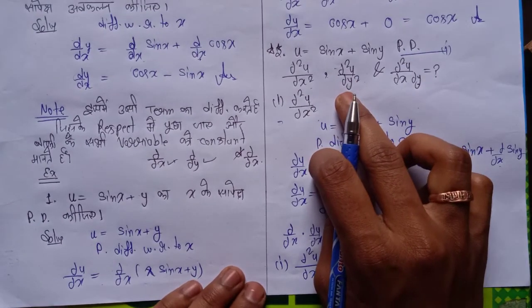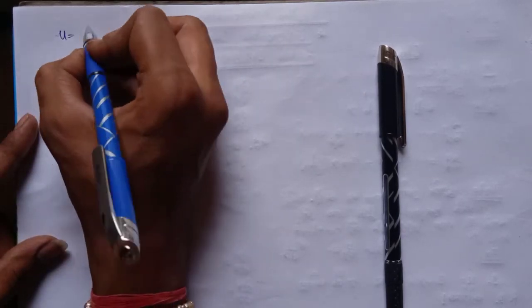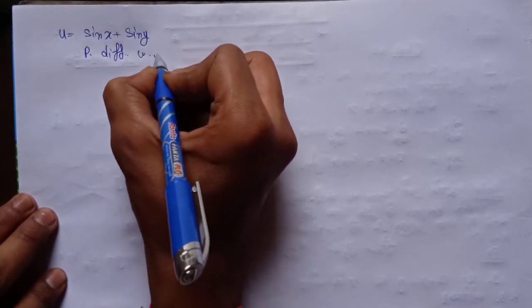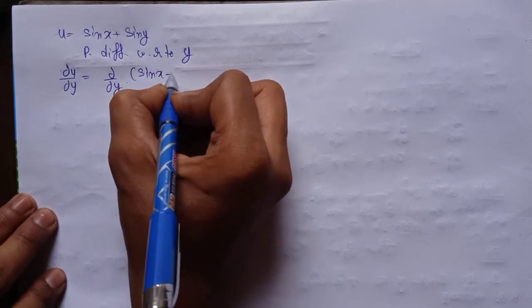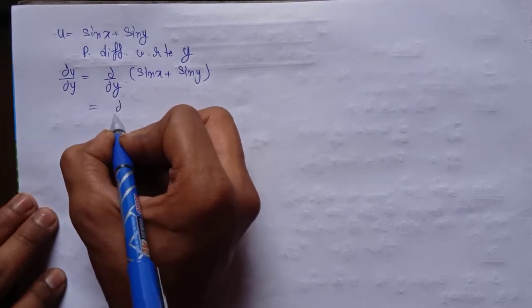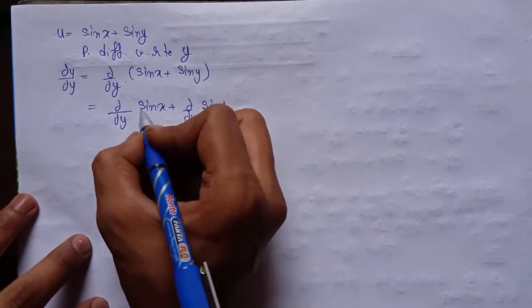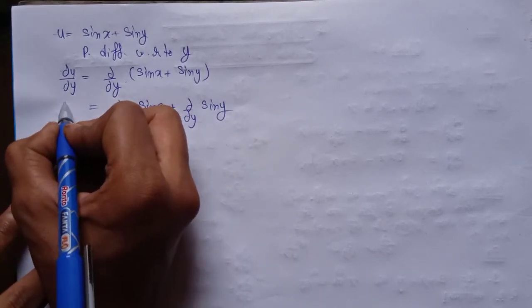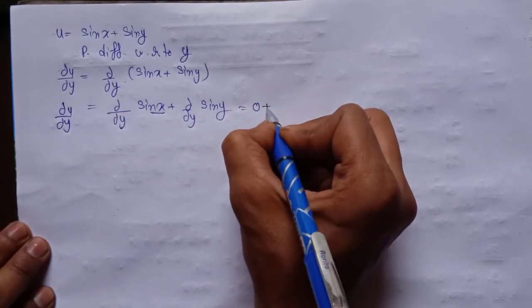Now the second part asks for ∂²u/∂y². So we again take the question: u = sin x + sin y. We will find partial differentiation with respect to y. So: ∂u/∂y = ∂/∂y of sin x + ∂/∂y of sin y. Since sin x has no y, it is constant — derivative is 0. And sin y differentiates to cos y. So ∂u/∂y = cos y.